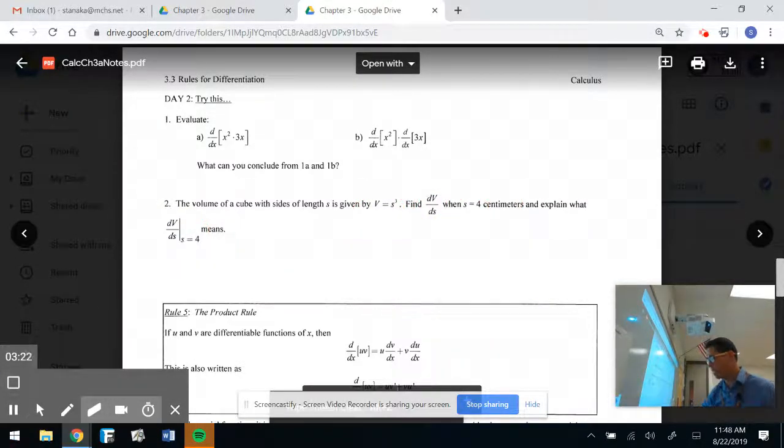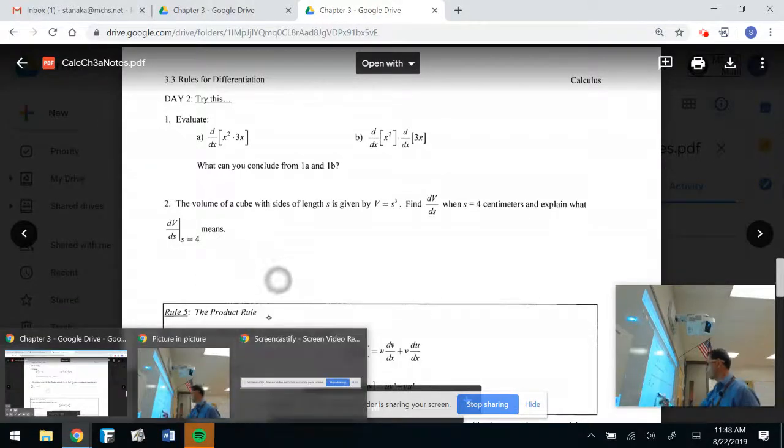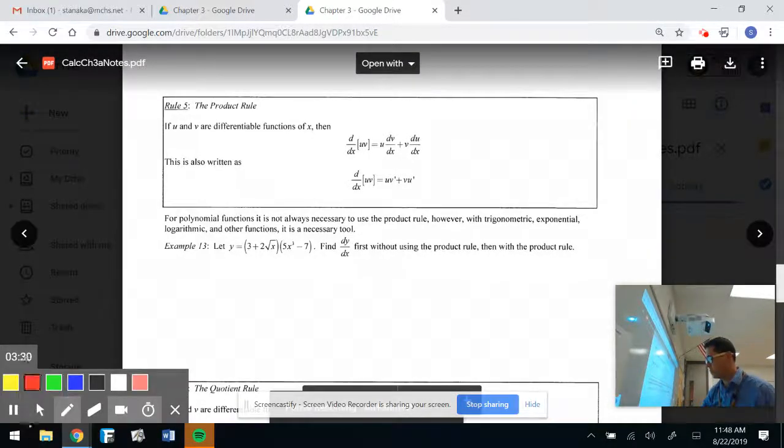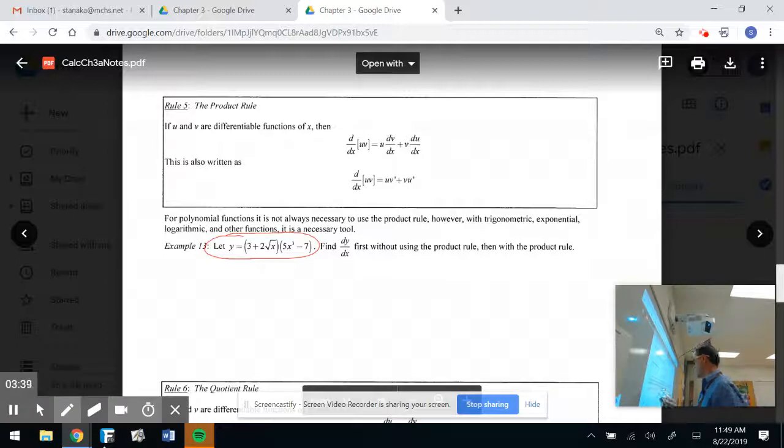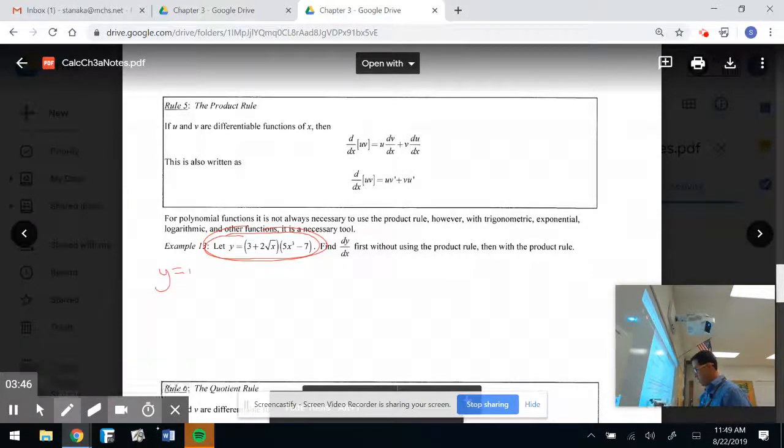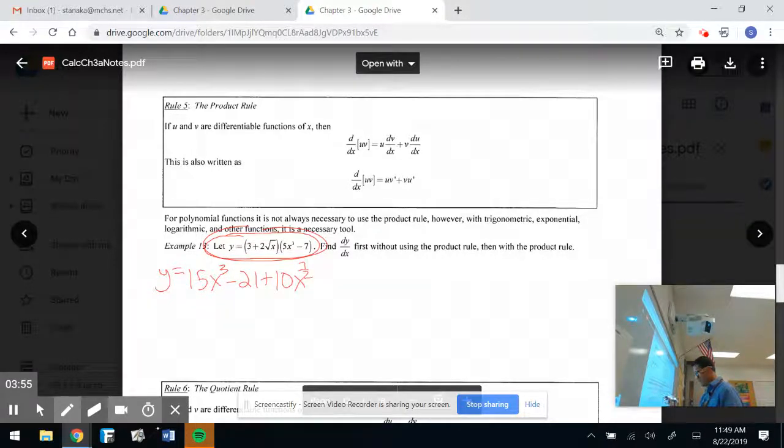But now, let's get to the nuts and bolts here of our rules and the biggest rules that we are going to be dealing with in Chapter 3, the product rule. And here we go, the product rule. To understand what the product rule is about, we're going to look at this guy right here. And we're going to do it how we would solve this if we didn't know the product rule. Now, if we didn't know the product rule, we would go ahead and do a little first, inside, outside, last. And I kind of have this simplified already. So if I did that, I would get 15x to the third minus 21 plus 10x to the 7 halves minus 14x to the 1 half. That's just foiling that bad boy out, doing my little distributive property.